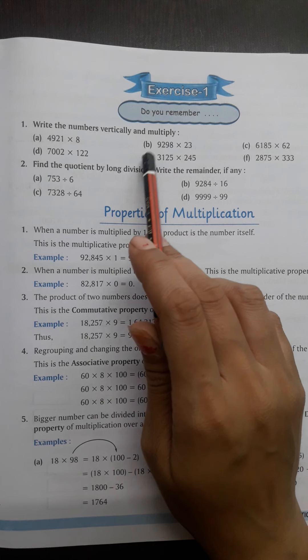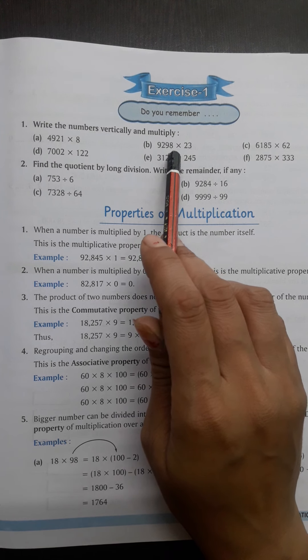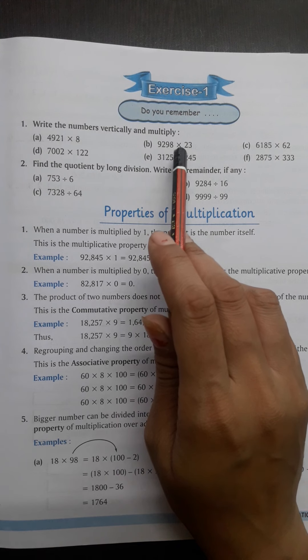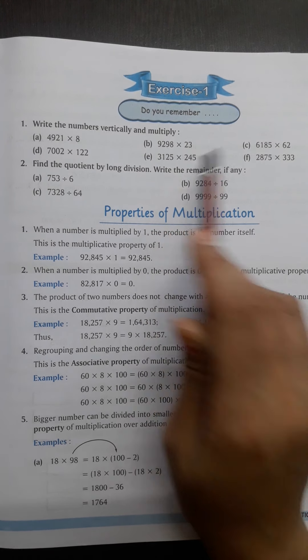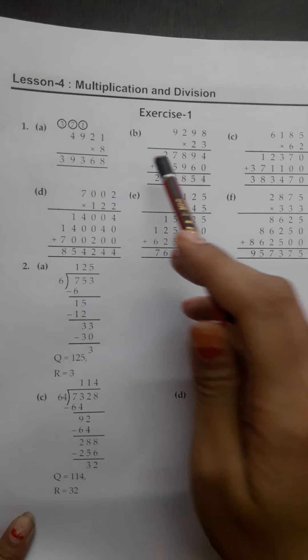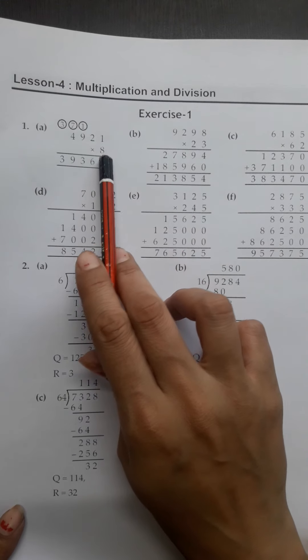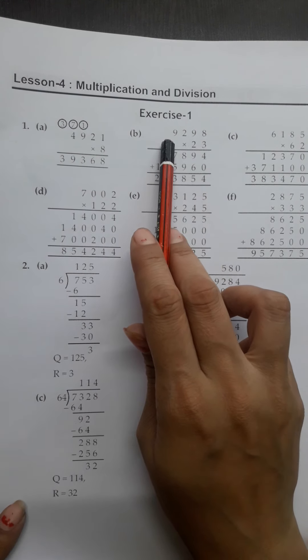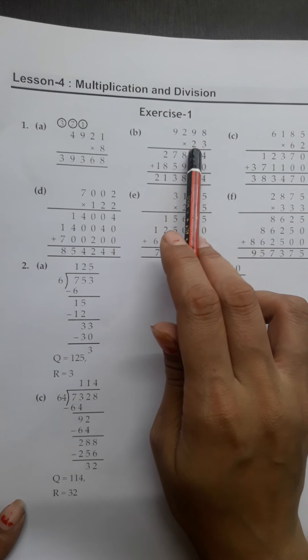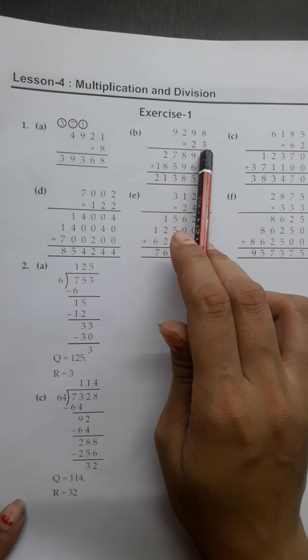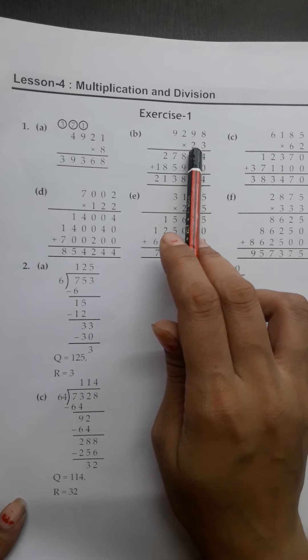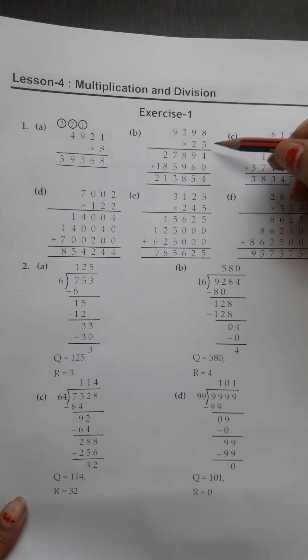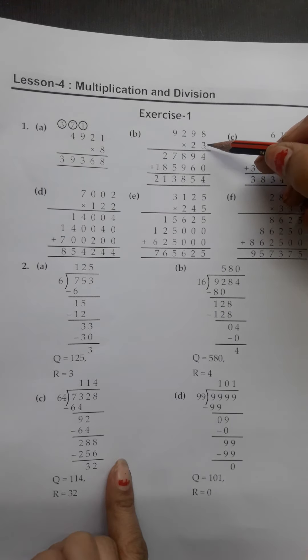Same as B. 9,298 multiplied by 23. Now you can see here there was 1 digit. Now there are 2 digits. We have arranged 10's place here. First, we multiply by 3.